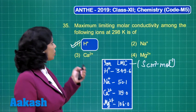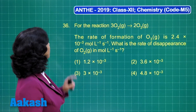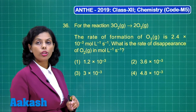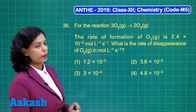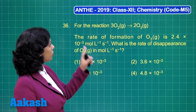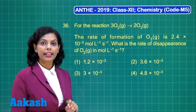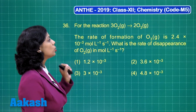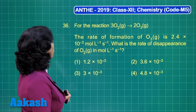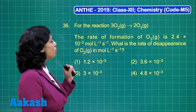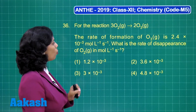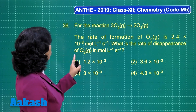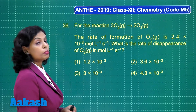Now the turn is for question number 36. For the reaction: 3O₂ → 2O₃. Both the reactant and the products are in the gaseous phase. The rate of formation of ozone is 2.4×10⁻³ mole per liter per second. What is the rate of disappearance of O₂ in mole per liter per second?